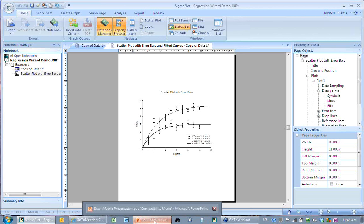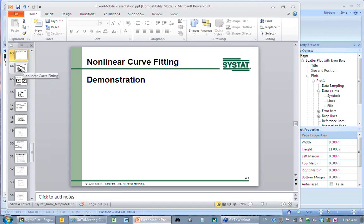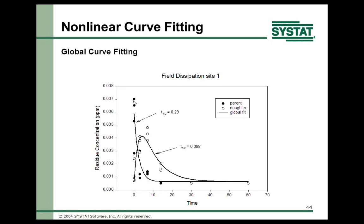Here's global curve fitting. This was pollution data measured in Alaska: the pollutant reacted with something in the soil, producing a daughter compound that increased then decreased. The scientists knew that one time constant was shared between the two dynamics, so they fit two data sets simultaneously with the same sum-of-two-exponentials equation but different parameters — except for that one shared time constant. That's global curve fitting, and the curves shown are the results.